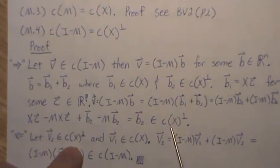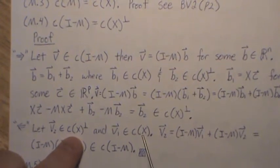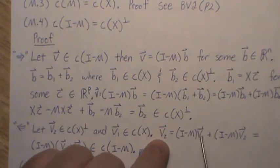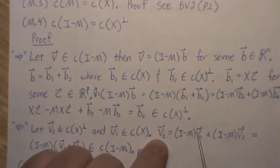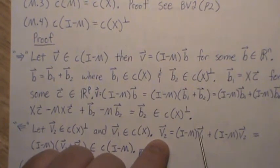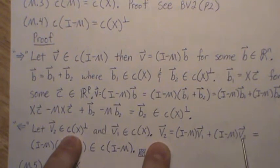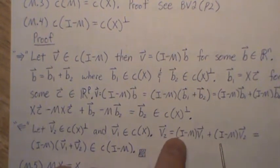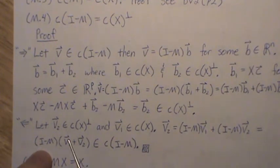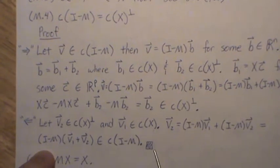Now let's prove it the other way. Let V2 be in the orthogonal complement of the column space of X, and pick any vector V1 in the column space of X. Then V2 equals (I - M)(V1 + V2). Multiplying in: M(V1) = V1 since V1 is already in the column space of X, so V1 minus V1 is zero. And M(V2) = 0 since V2 is in the orthogonal complement. So we're left with V2. Factoring out (I - M), the vector (V1 + V2) is in the column space of I minus M. Both directions are proved.